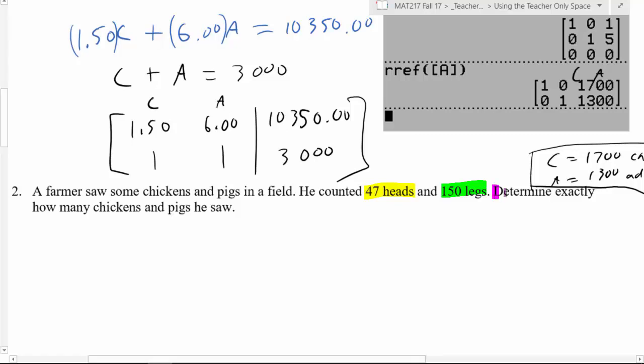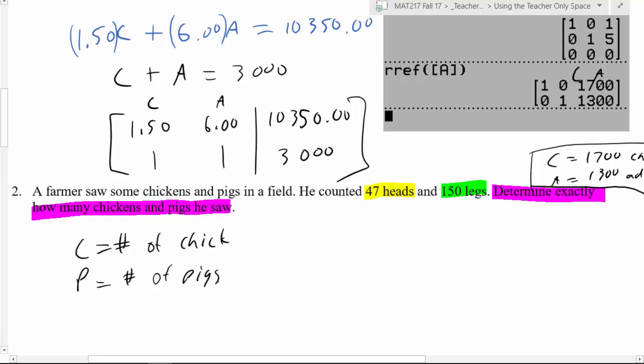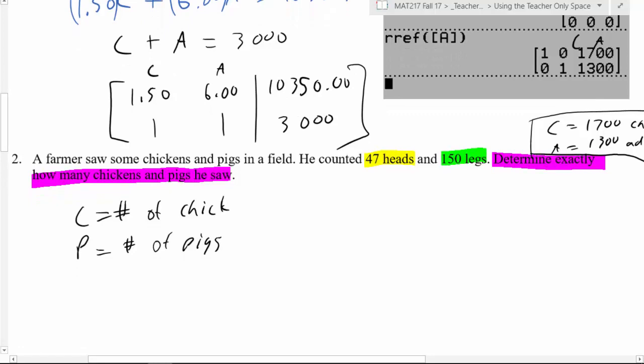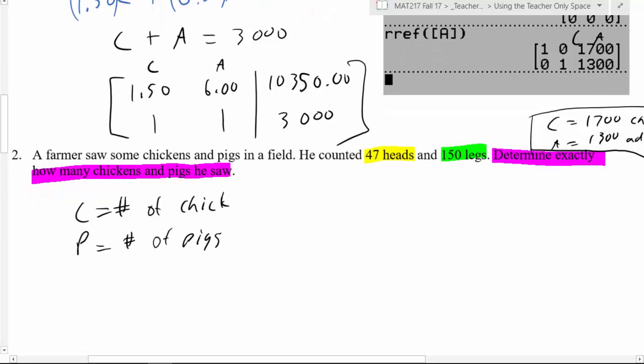Alright, so step one, determine your variables. What are we asking for? C equals number of chickens, and P equals number of pigs. So now that we have our variables, let's look for two things that relate them. Let's look for something that relates them. Heads. How many heads does a chicken have? 1. Right, and how many heads does a pig have? 1. So the number of chickens plus the number of pigs should equal 47.